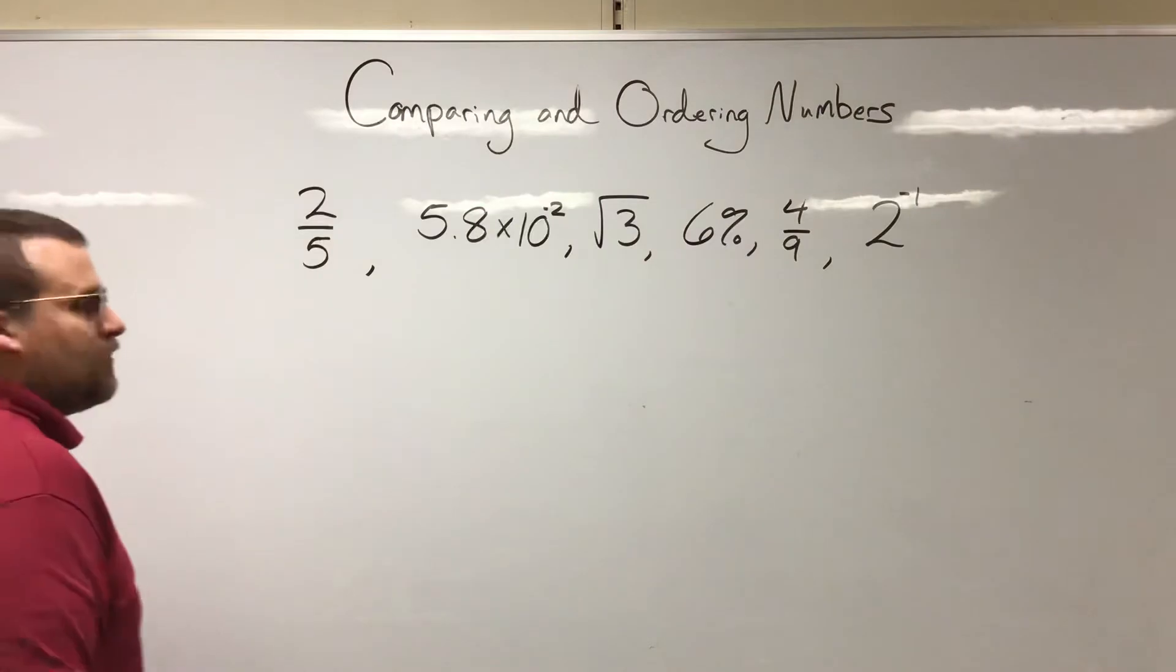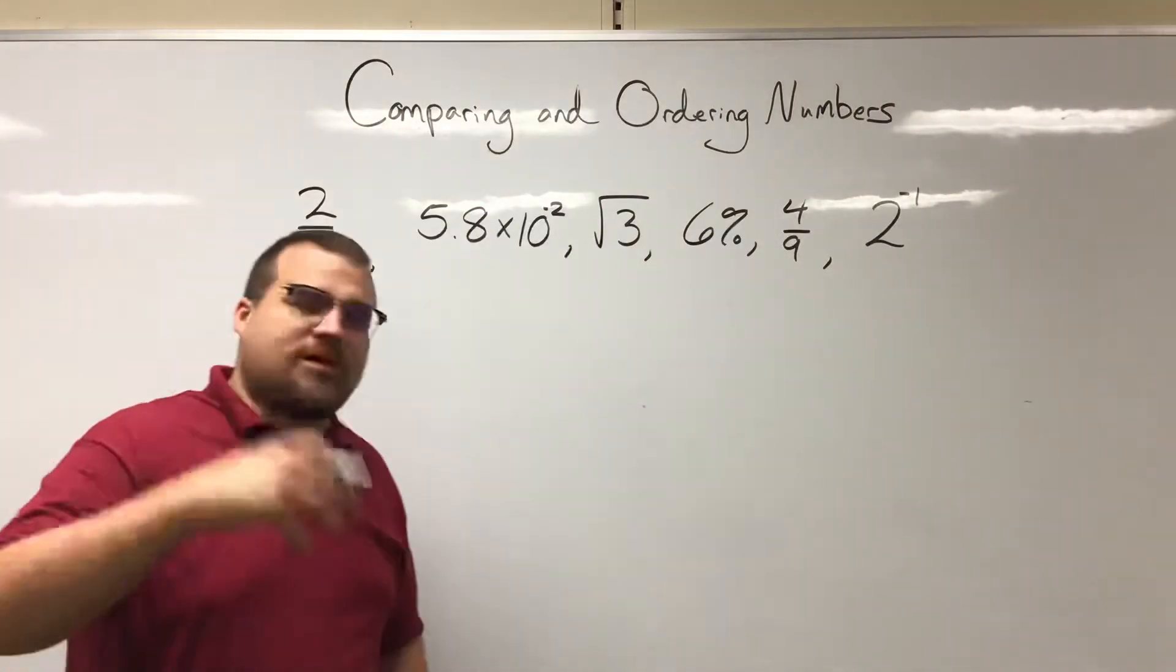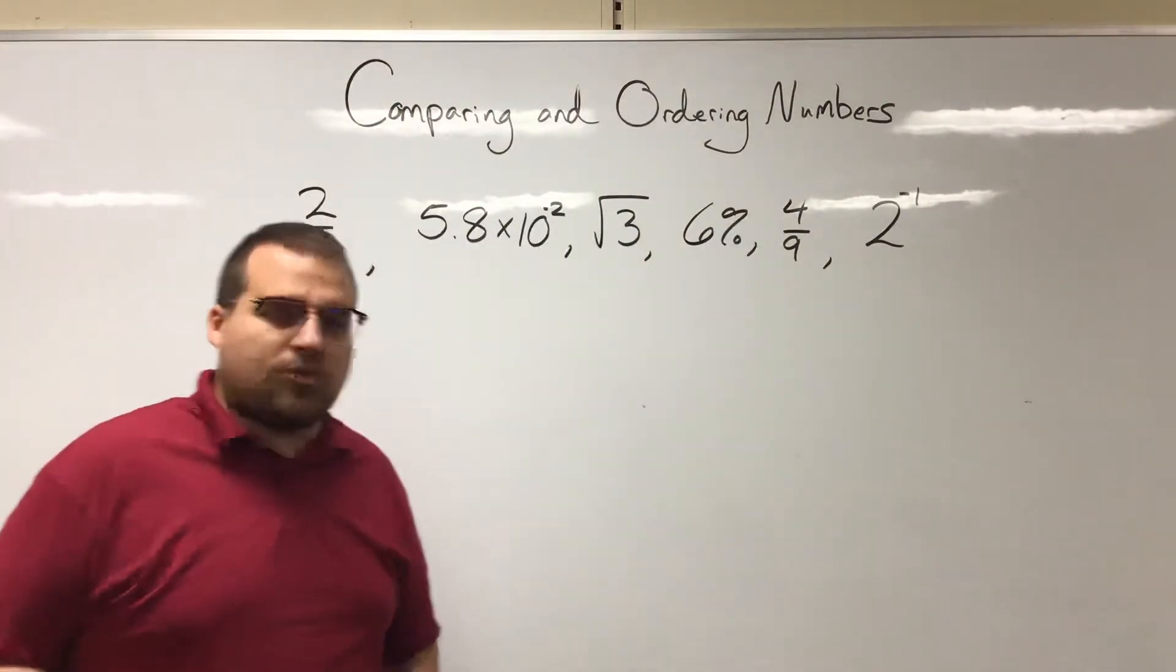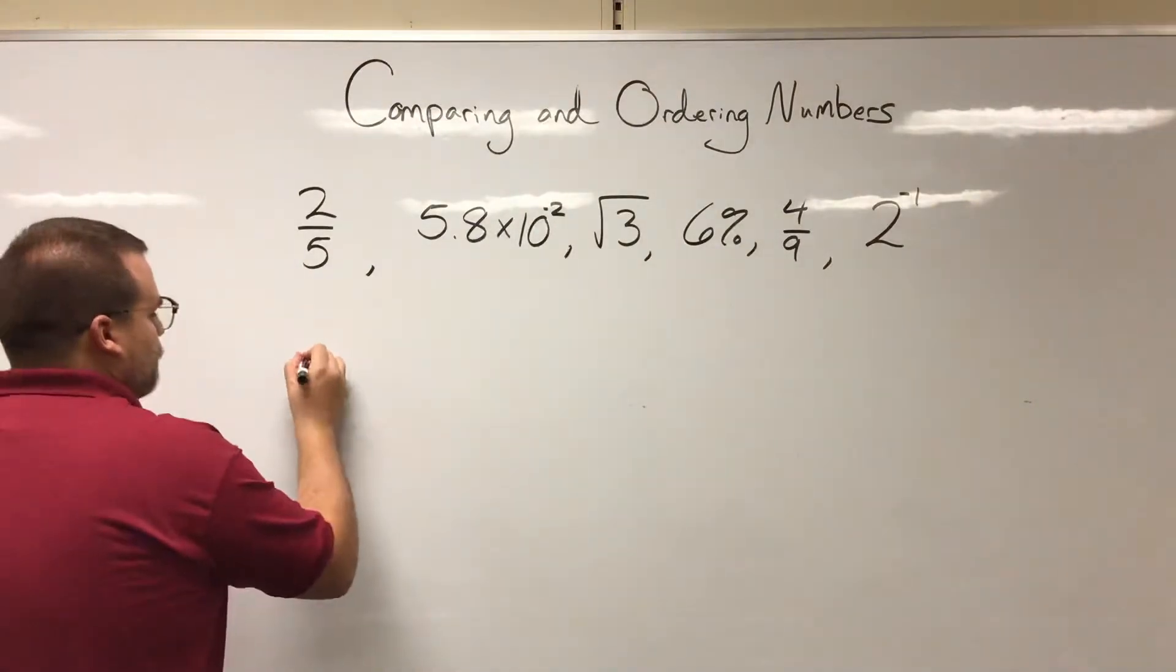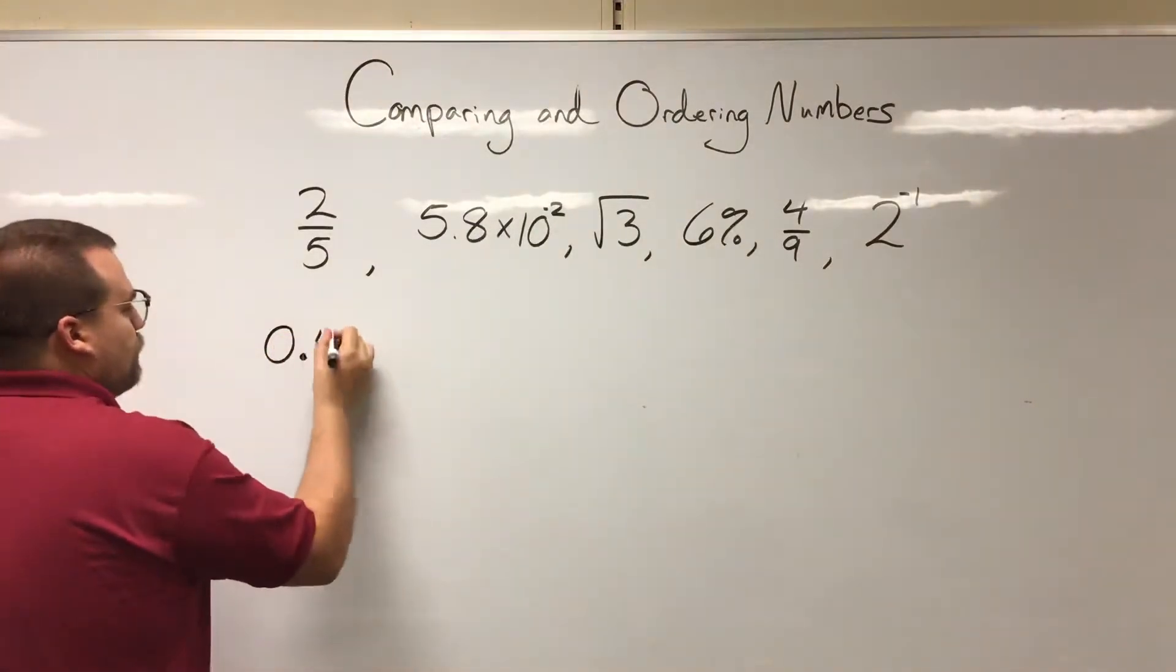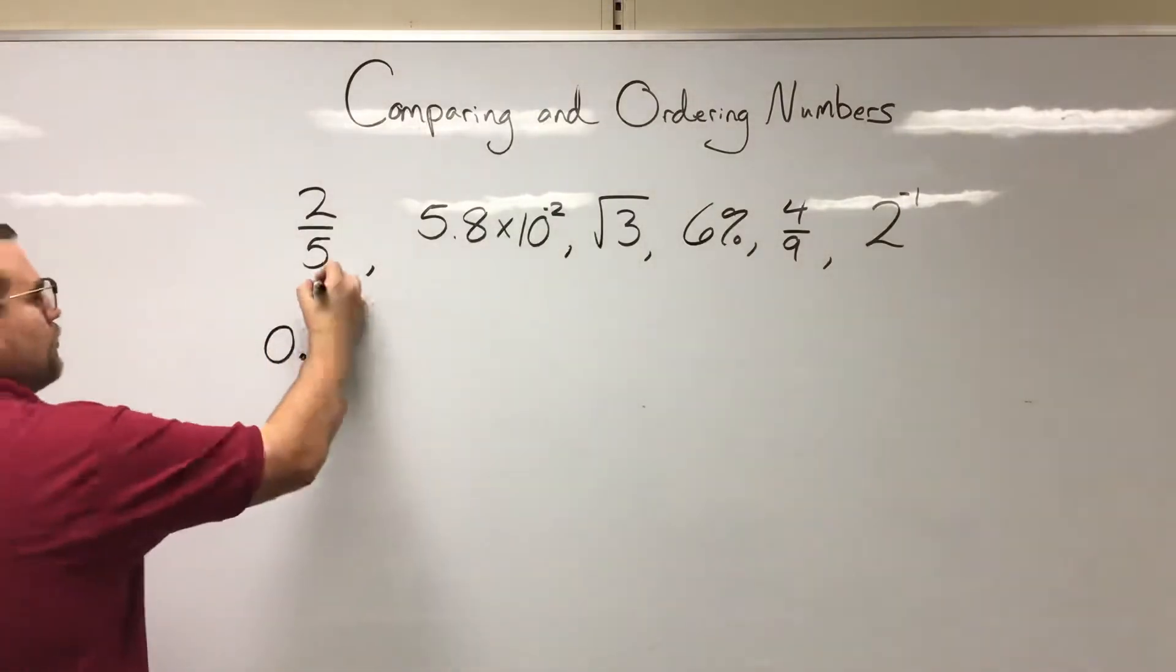So let's take some of these and figure out what we would get. 2 over 5. If you had that number and you put it into a calculator you would get out 0.4. So I've converted one number.